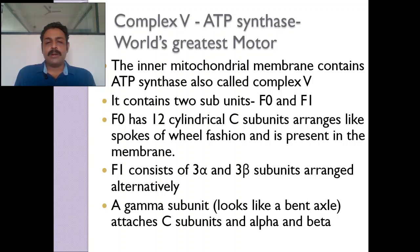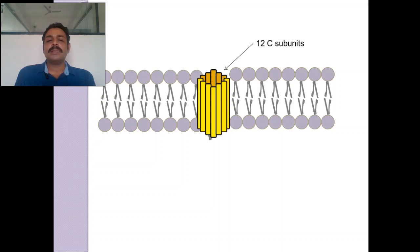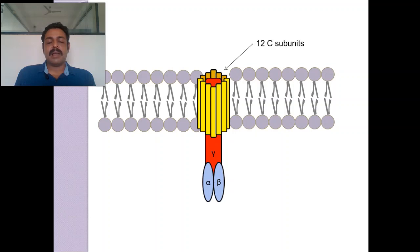Complex V is called ATP synthase — it is the smallest molecular motor. It contains two subunits: F₀ and F₁. It has 12 c subunits and three alpha and three beta subunits, and also a gamma subunit which functions as an axle. The c subunits are arranged like the spokes of a wheel. The gamma subunit functions like an axle and is immersed in the three alpha and three beta arrangement — this is called the F₀ unit and F₁ unit.